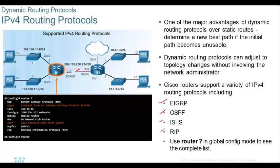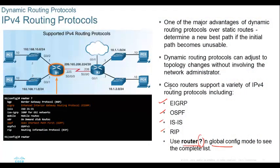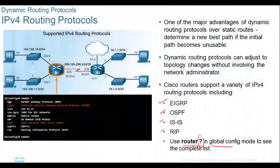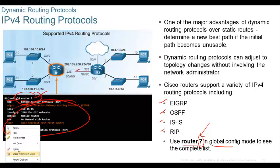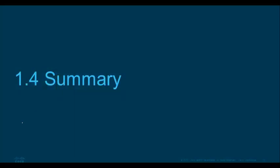Now, if you want to know what protocols are supported on a router, go to global configuration mode, type 'router', and put a question mark. When you put the question mark, it will list all the routing protocols that the router supports. So we are going to learn about routing protocols in the next chapter.